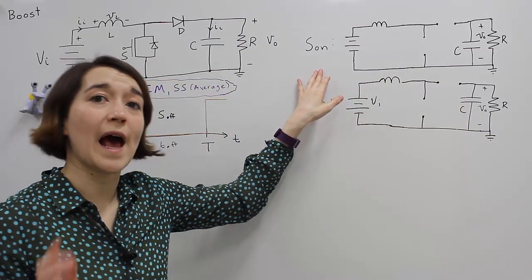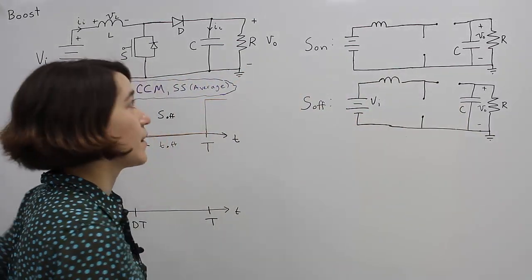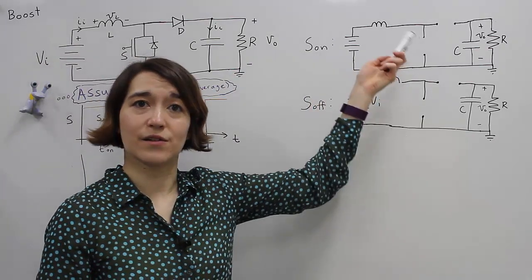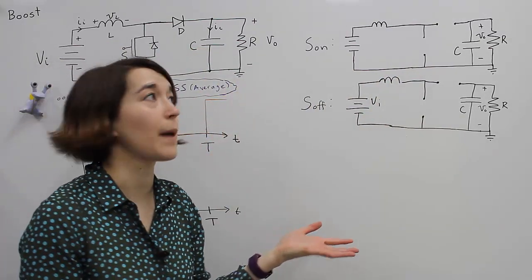We're going to start with when S is on. Then we have this basic circuit diagram. The components, the inductor, capacitor, resistor, those are all the same.